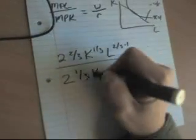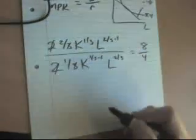Marginal product of capital, 2, drop the exponent on capital down, K to the 1/3 minus 1, L to the 2/3 and that's equal to w over r, 8 over 4. So 2 cancels with 2, 3rd cancels with 3rd.